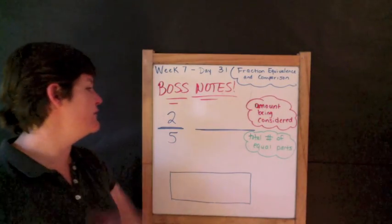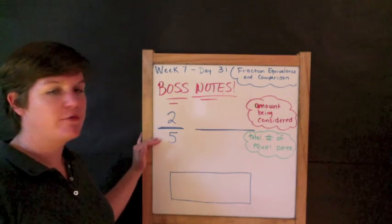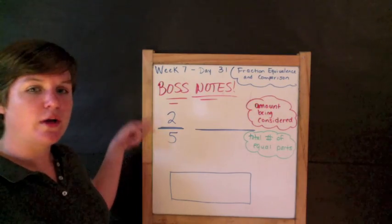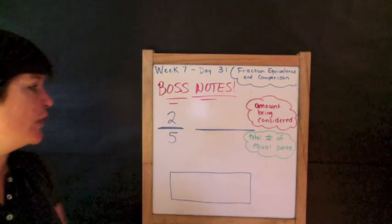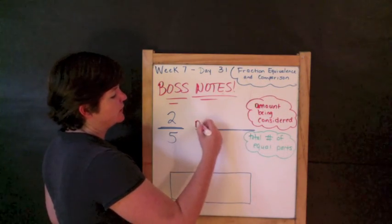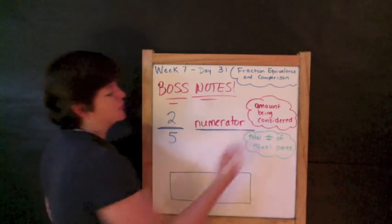Alright, so I've given you the example of 2, fraction bar 5. Okay, you would read this as two-fifths, two-fifths. This top part is going to be the amount that's being considered. It's going to be labeled as our numerator.